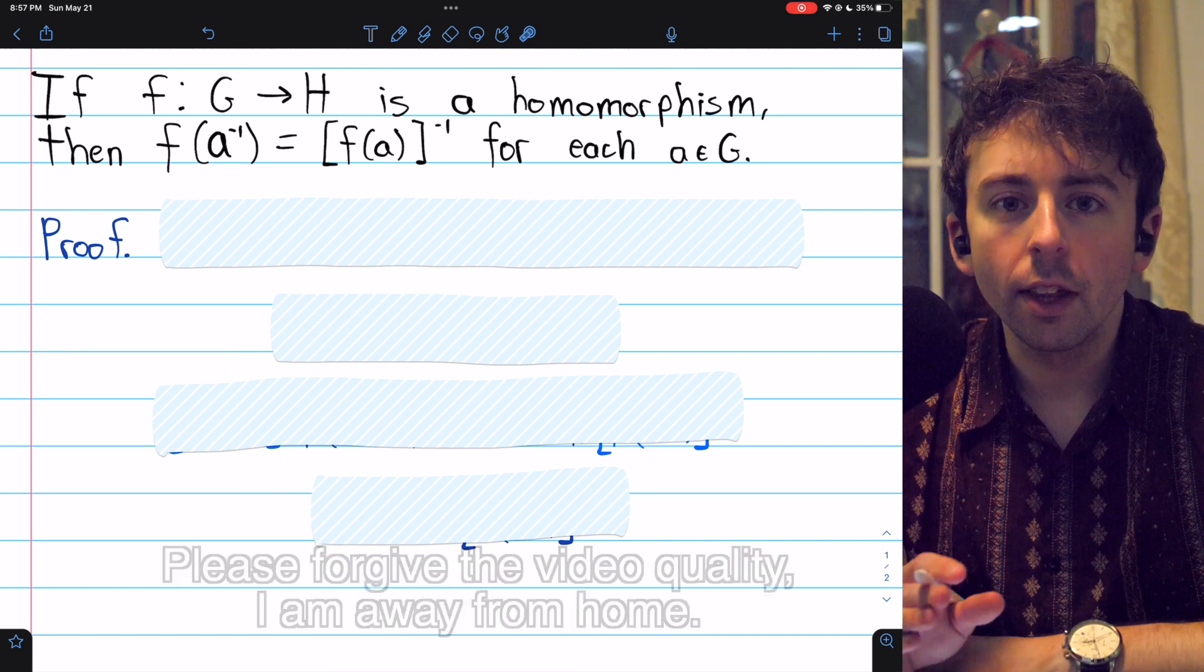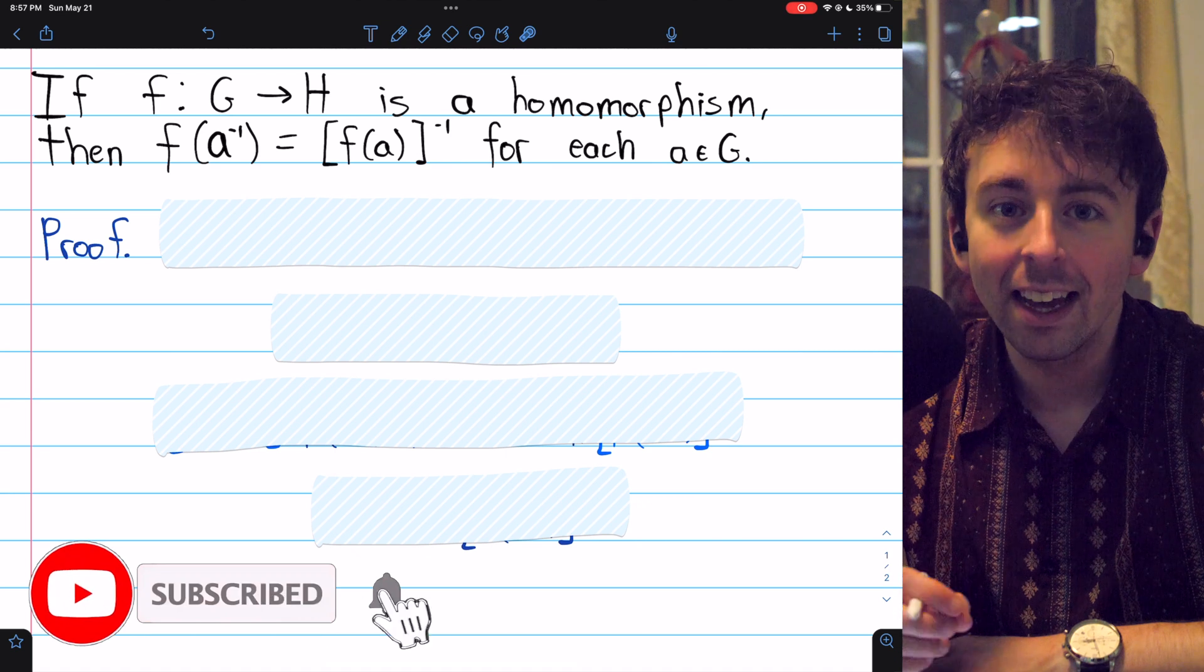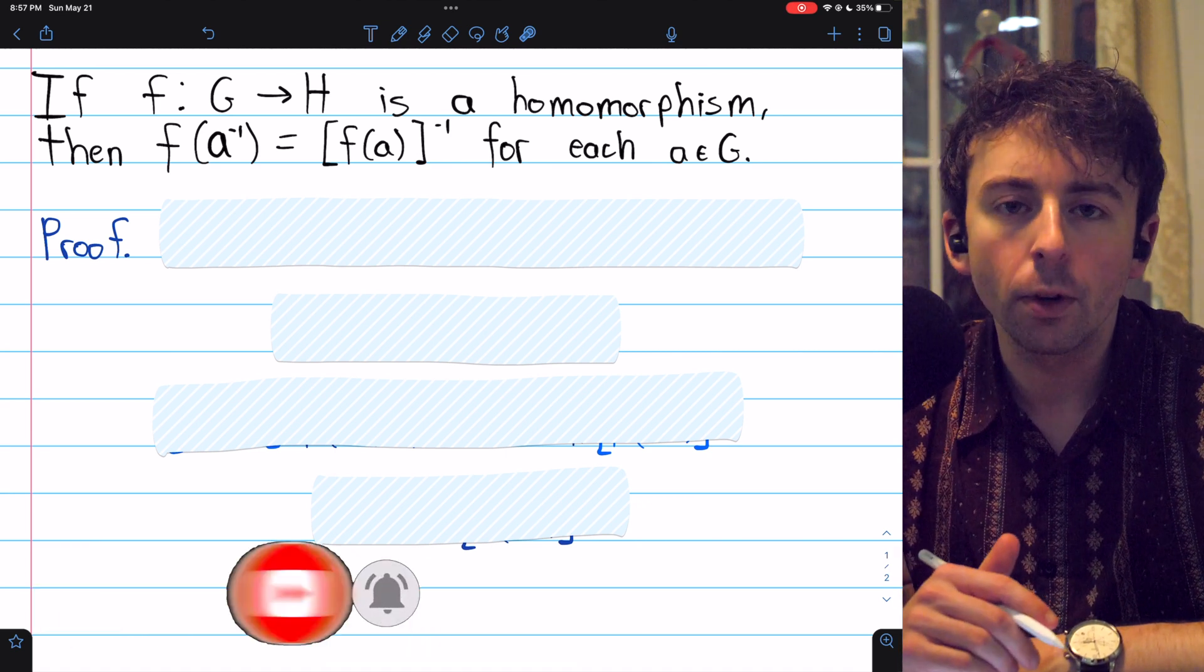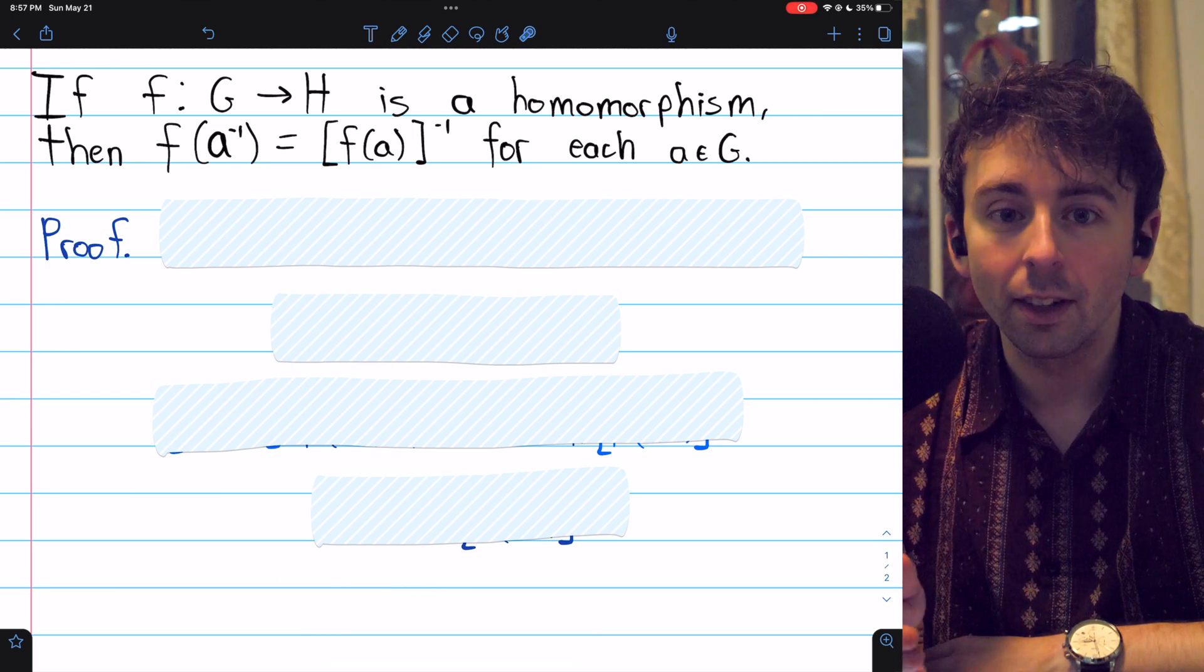In a previous lesson, we proved that group homomorphisms map identities to identities. Today, we'll use that result to prove another basic property of homomorphisms, that they map inverses to inverses.